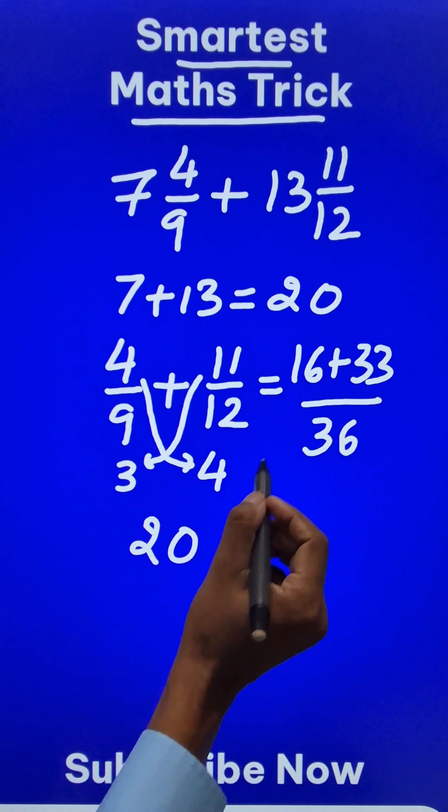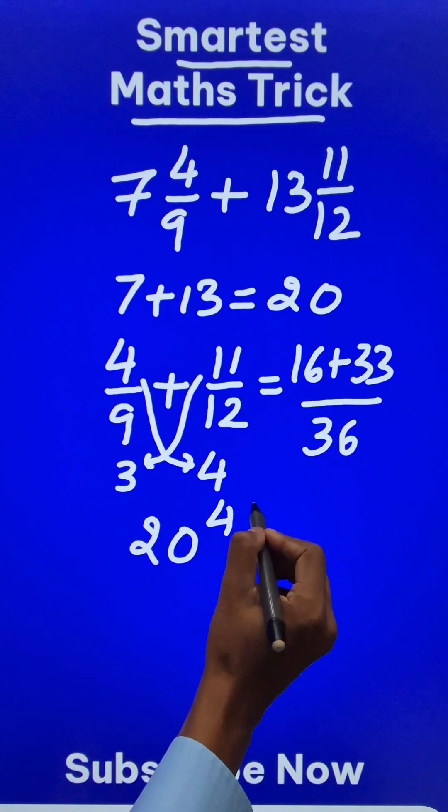So the whole number part, 20 followed by this is 49/36.